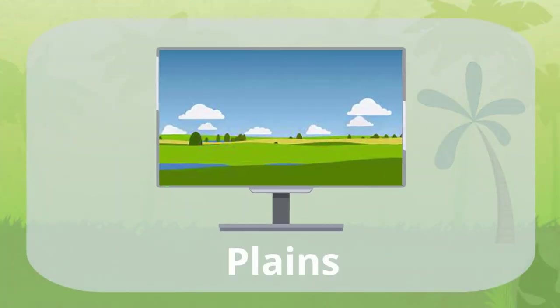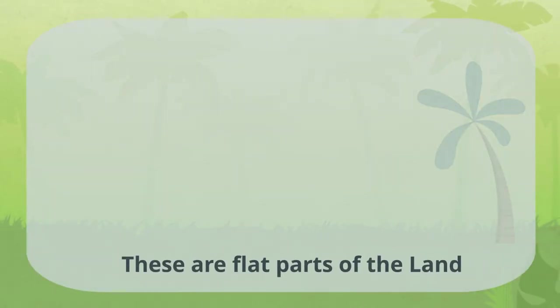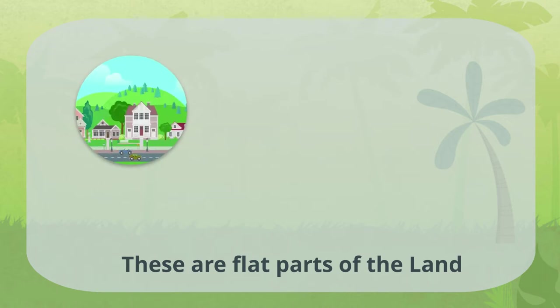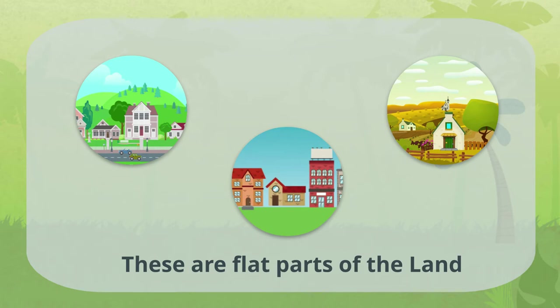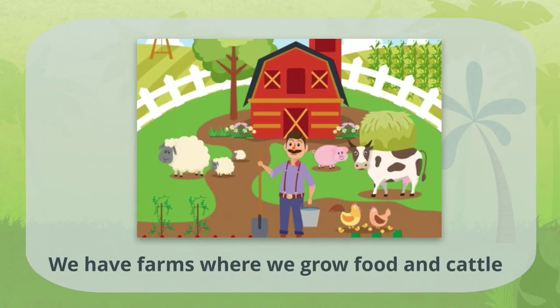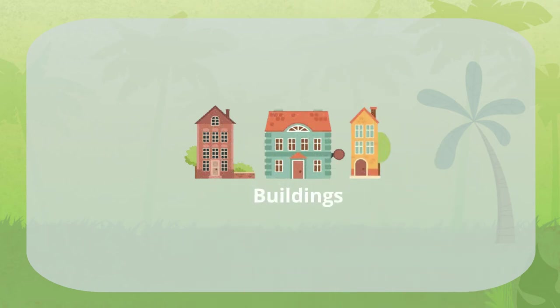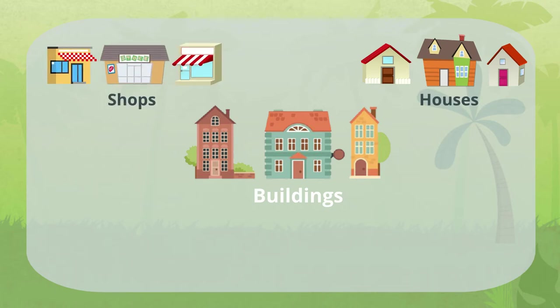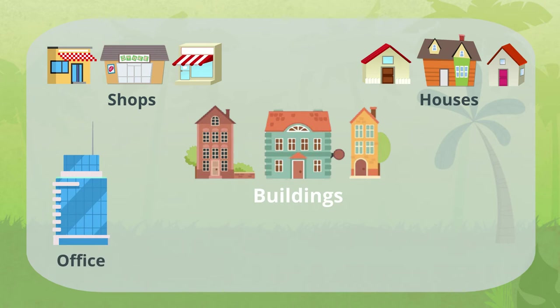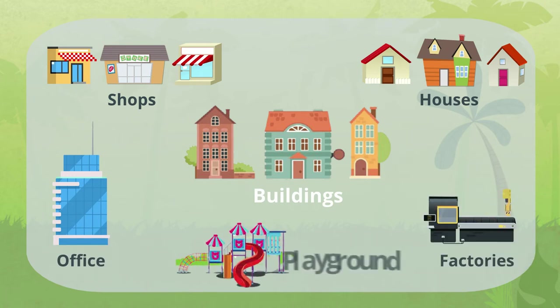Plains: We humans mostly live and grow food on plains. These are flat parts of the land. Cities, towns, and villages are often founded on these surfaces. We have farms where we grow food and cattle. We have all kinds of buildings on this type of surface, like houses, shops, offices, factories, and playgrounds, because it is easier to live and build on a flat surface.